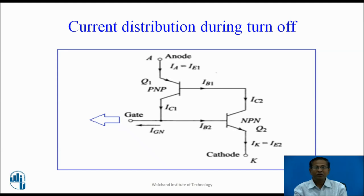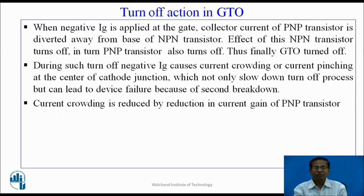Current distribution during turn-off. To turn off the GTO, it requires a negative IG, which diverts the collector current of the PNP transistor away from Q2. As a result, the collector current of Q2 reduces, the base current of PNP reduces, and the collector current of PNP also reduces, causing the GTO to turn off. During such turn-off, negative IG causes current crowding or current pinching at the center of the cathode junction, which not only slows down the turn-off process but can lead to device failure due to second breakdown. Current crowding is reduced by reducing the current gain of the PNP transistor.